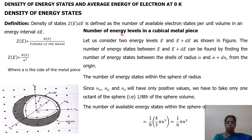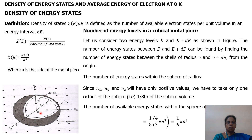Now let us first find the number of energy levels in the cubic metal piece. For this, it is considered a three-dimensional k-space sphere in the array of atoms in the metal, by taking Nx, Ny, Nz as the three coordinate axes with O as the origin. To find the number of energy states between the energy interval E and E+dE, it is enough to find the number of energy states between the shell of radius N and N+dN, because it represents the energies E and E+dE respectively.